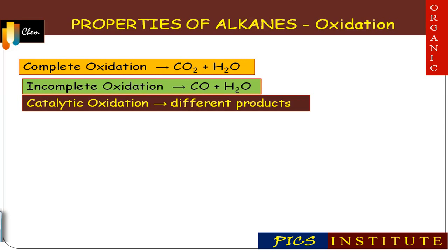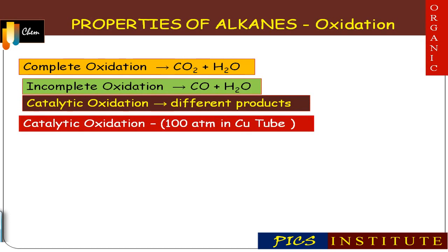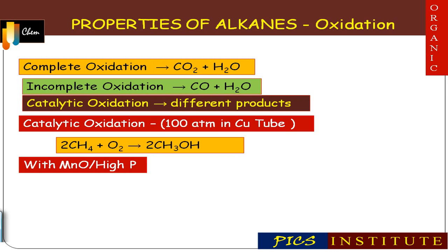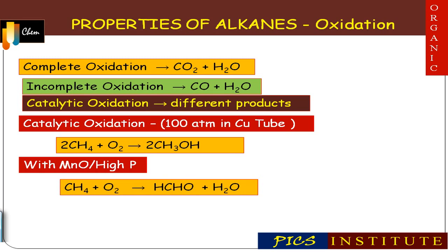Number three: catalytic oxidation, which gives different products with different catalysts. For example, in a copper tube at 100 atmospheric pressure, methane on oxidation gives methanol. So alkanes give different products on different catalytic oxidation conditions.